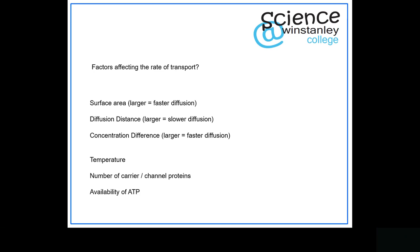Similarly, how available ATP is matters. If there's lots of ATP available, active transport can happen very quickly. If ATP becomes a limiting factor — not being produced quickly enough — active transport is slowed down. So a lot of the time there are rules, but it depends on which type of transport you're thinking about.